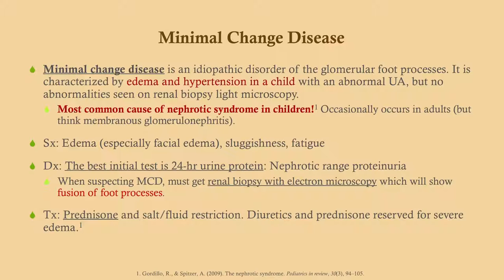Minimal change disease is the most common cause of nephrotic syndrome in children. It occasionally occurs in adults, but in an adult the same picture should make you think membranous glomerulonephritis. Symptoms include edema — especially facial edema — sluggishness, and fatigue. Best initial test is a 24-hour urine protein; you'll see nephrotic-range proteinuria. The only definitive diagnosis is renal biopsy — electron microscopy shows fusion of the foot processes, but light microscopy shows no changes, hence the name. Treatment is prednisone, plus salt and fluid restriction; diuretics are reserved for severe edema such as pulmonary edema.